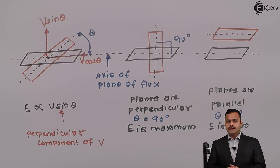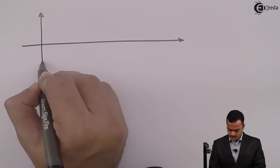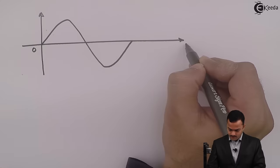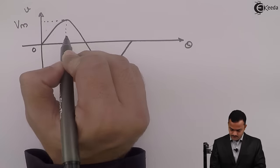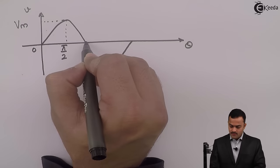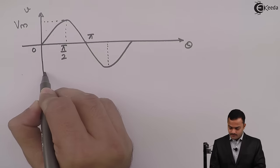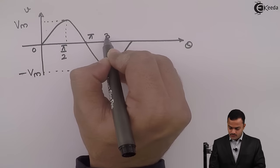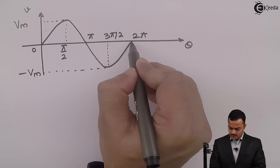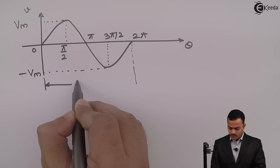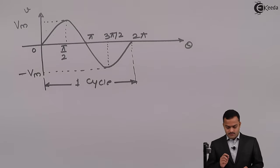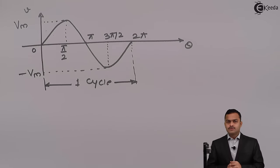So the EMF induced is proportional to V sin θ, where V sin θ is the perpendicular component of V. Resolving into components gives V sin θ and V cos θ. The EMF induced is therefore of an alternating nature — EMF induced in a DC machine is AC in nature. It reaches maximum value at π/2, becomes zero at π, reaches negative maximum at 3π/2, and becomes zero again at 2π, completing one cycle from zero to 2π.